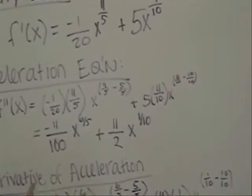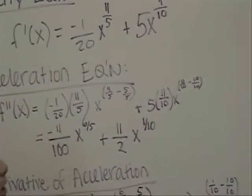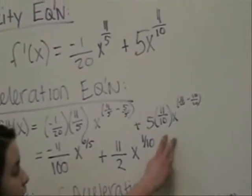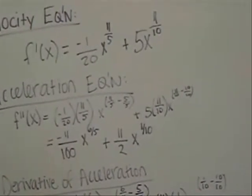And then the same principle is used by subtracting 1 from the power. So 11 fifths minus 5 fifths will equal 6 fifths. The same principle is applied to the second term of the equation which yields 11 halves x to the 1 tenth.